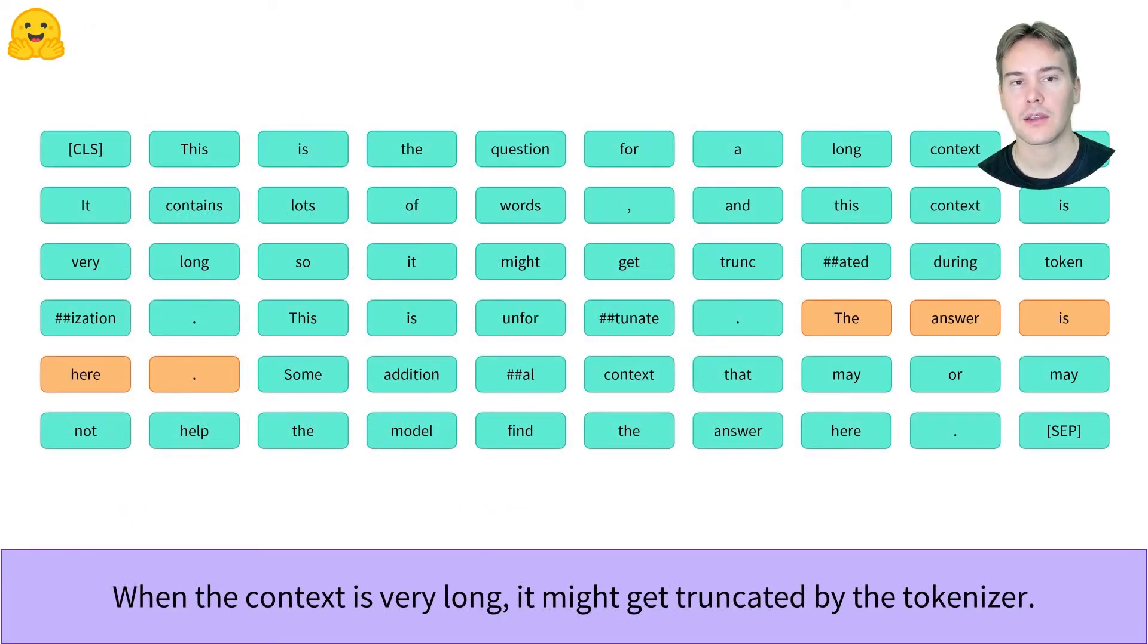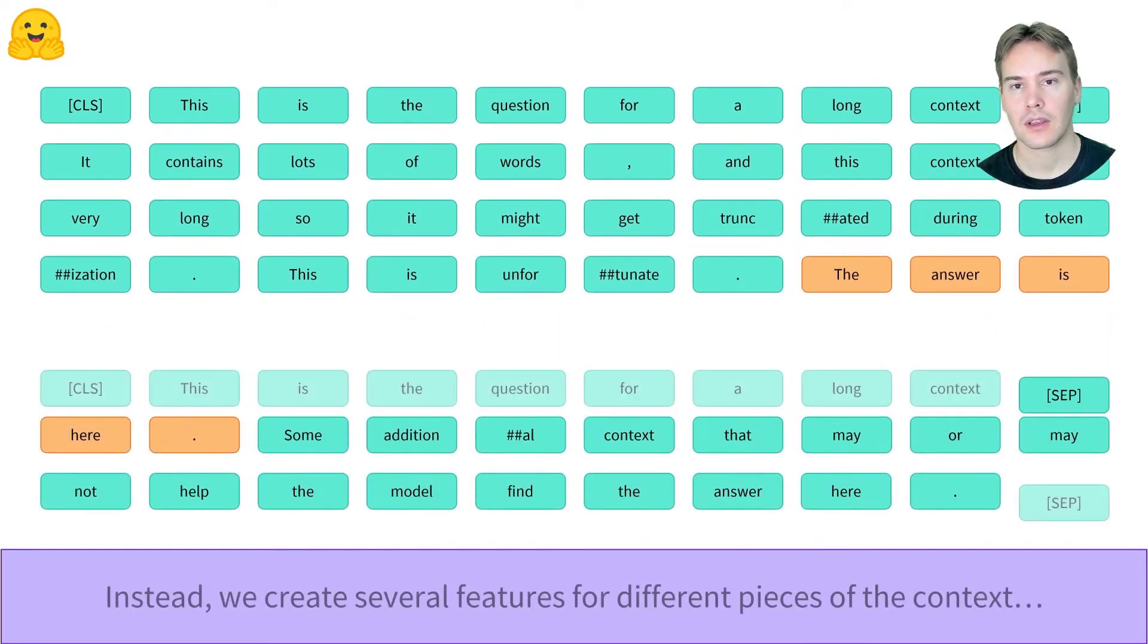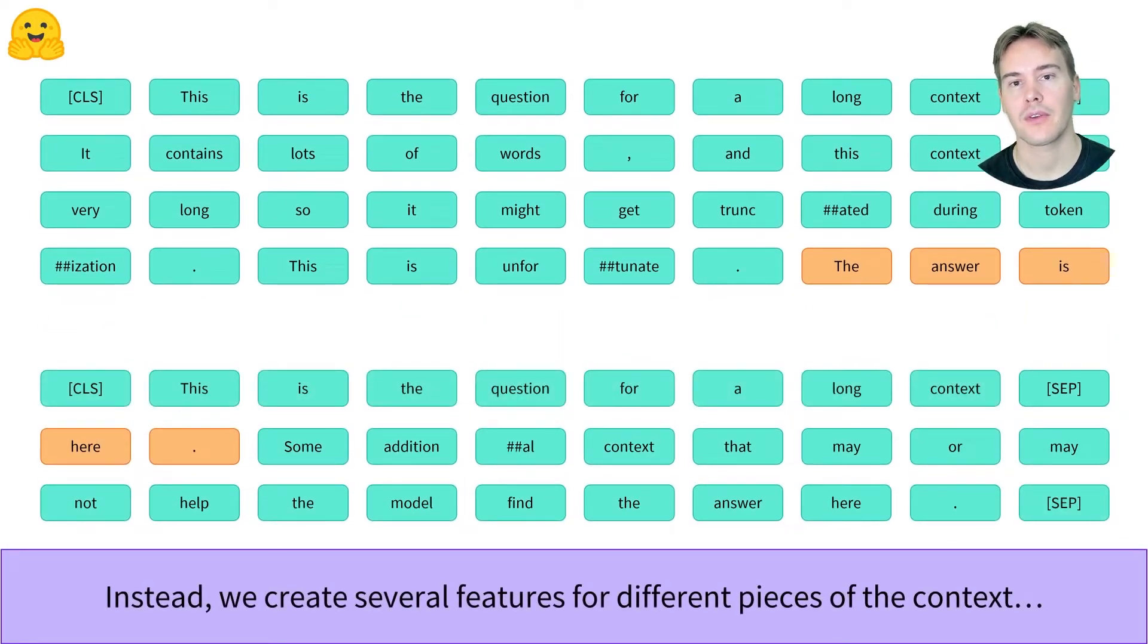Now when the context is long, it might get truncated by the tokenizer. This might result in part of the answer, or worse, the whole answer being truncated. So we don't discard the truncated tokens but build new features with them.